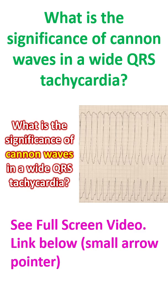In the rare instance of ventricular tachycardia with regular retrograde conduction, there could be regular cannon waves. Irregular cannon waves are not seen in supraventricular tachycardia because of AV synchrony. Regular cannon waves may be noted in junctional tachycardia with regular retrograde conduction.